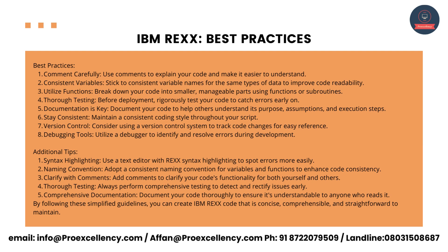Version control — consider using a version control system to track code changes for easy reference. Debugging tools — utilize a debugger to identify and resolve errors during development. Additional tips: Syntax highlighting — use a text editor with REXX syntax highlighting to spot errors more easily. Naming convention — adopt a consistent naming convention for variables and functions. Clarify with comments — add comments to clarify your code's functionality. Thorough testing — always perform comprehensive testing to detect and rectify issues early. By following these guidelines, you can create IBM REXX code that is concise, comprehensive, and straightforward to maintain.